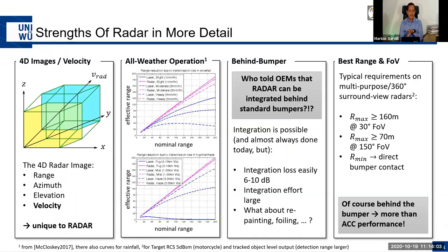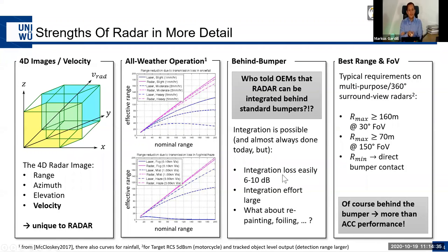However, integrating a 77 GHz system behind a bumper — especially one with metallic paint — is very challenging. Even with the correct mounting position and angle, you can still lose 6–10 dB behind the bumper, limiting detection range to roughly 100 meters versus 150+ meters in free space. Radar also offers a good compromise between range and field of view: focused beams provide long detection ranges, while broad beams cover shorter ranges of 50–70 meters.